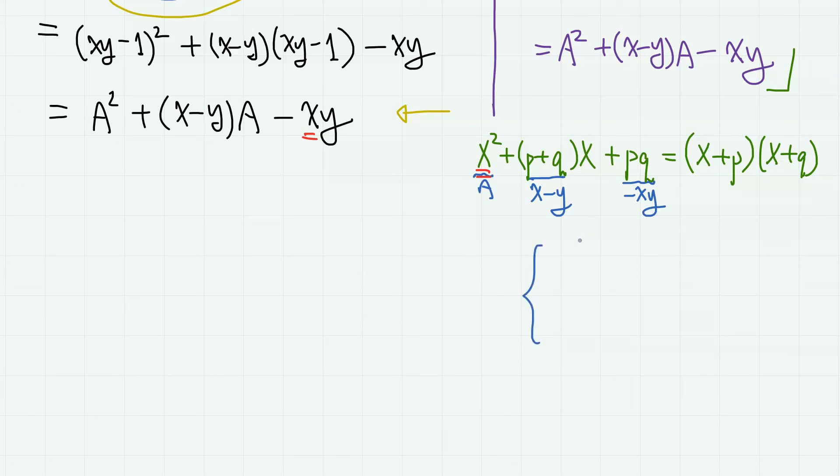Therefore, we can apply this formula with X being a and p being small x, and q being minus y. Then using this expression, we simply have a plus x, times a minus y.